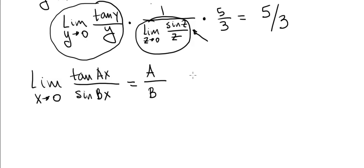And this just doesn't work for tangent over sine, it also works for limit as x goes to 0 of sine of ax divided by sine of bx. This will be a divided by b as well, and you can use any kind of combination of tangents and sines as long as both go to 0 inside the tangent and inside the sine.